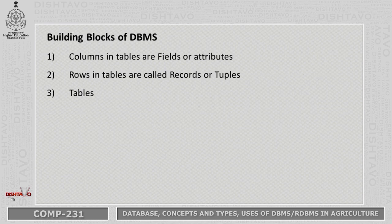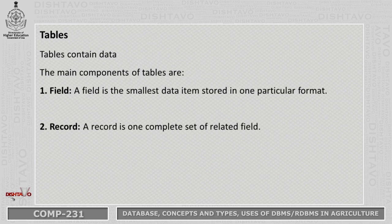Next are the building blocks of DBMS. There are three building blocks: columns in a table are called fields, rows in a table are called records or tuples, and the third is tables. A table contains data. A field is the smallest data item stored in one particular format. A record is one complete set of related fields.